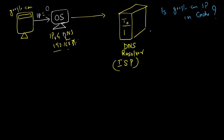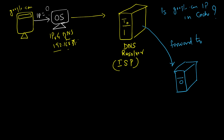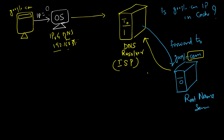If the IP is not in the DNS resolver's cache, it contacts the Root Name Server and forwards the request. The Root Name Server checks that the requested website is a .com website and accordingly returns the IP address of the .com TLD server to contact — it does not give the IP of google.com itself, but returns the IP address of the TLD server.